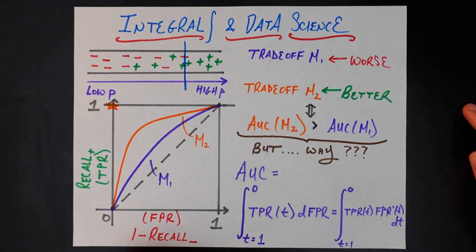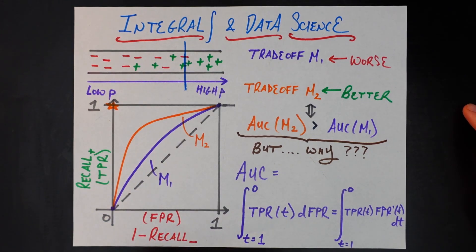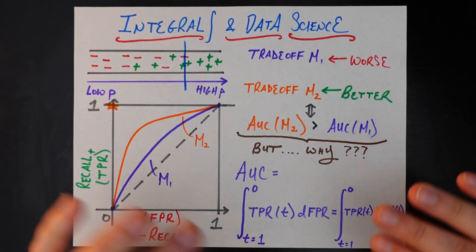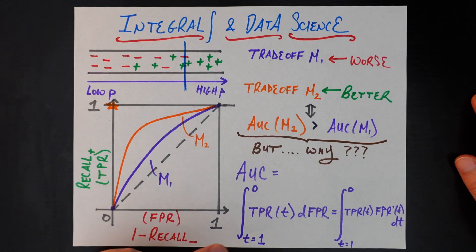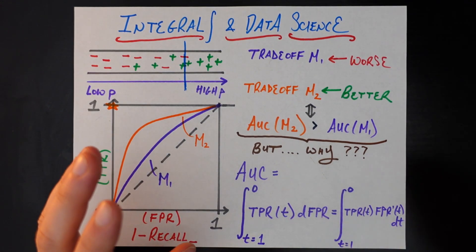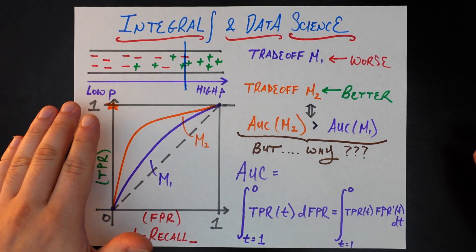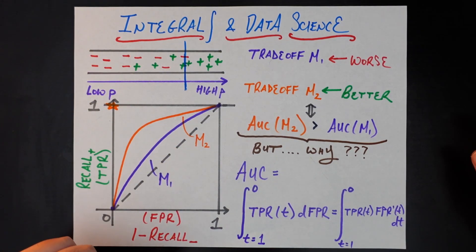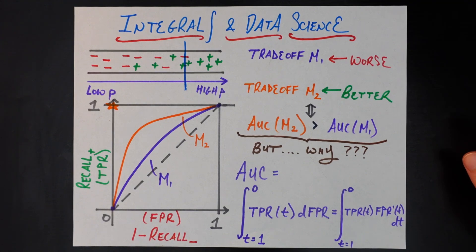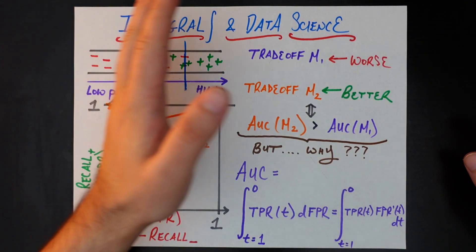We're going to assume today that you've trained some kind of binary classification model. You can insert your favorite application here — predicting whether a student is going to drop out of high school, predicting whether a customer is going to churn, whatever you want. Your model outputs some probability between zero and one saying how likely it is that an example is in the positive class. At low predicted probabilities most examples are in the negative class, and at very high predicted probabilities most are in the positive class. It's in the middle where things are interesting.